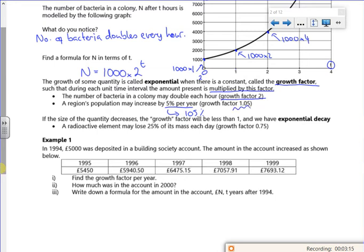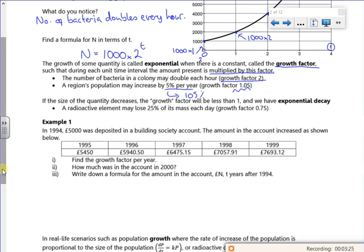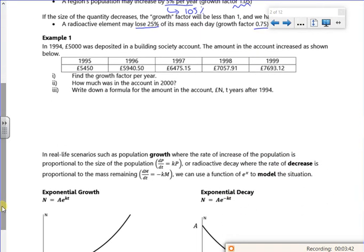If there was a 10 percent decrease, it would be 90 percent of what it was, so the factor would be 0.90. So if the growth factor is less than one, we have an exponential decay. If it loses 25 percent, it's only 75 percent of what it is from the previous day, so that gives me a factor of 0.75.